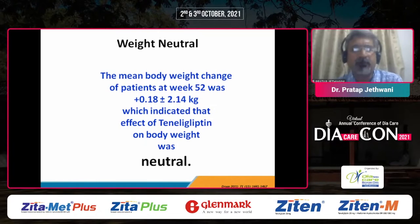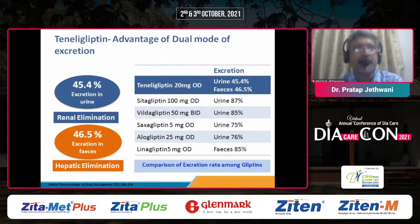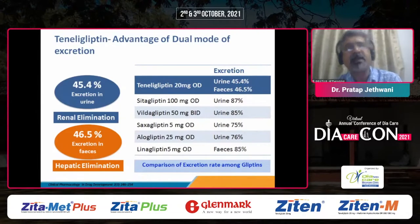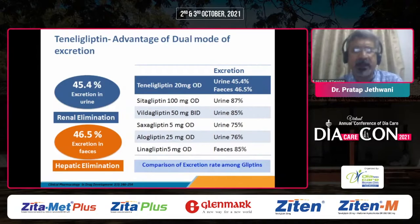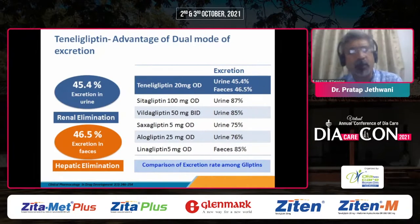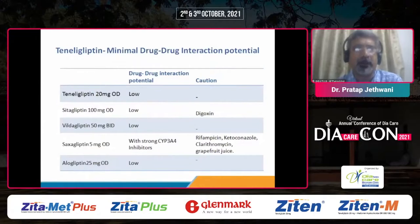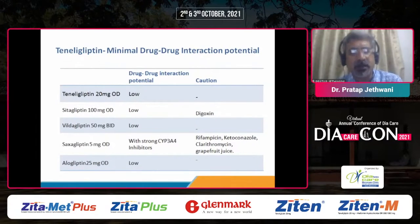Teneligliptin is weight neutral and hypoglycemia-friendly, as are most gliptins. A key advantage is its dual mode of excretion, meaning it can be used safely in chronic kidney disease patients without any dose modification — unlike vildagliptin, sitagliptin, or saxagliptin, which require dose modification in CKD. Linagliptin is the only other molecule that can be used safely in CKD. Teneligliptin also has minimal drug-to-drug interaction potential, unlike saxagliptin, which has interactions with multiple drugs due to its strong CYP3A4 inhibition.